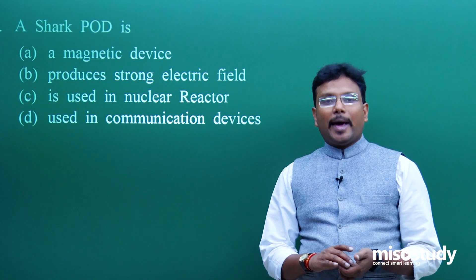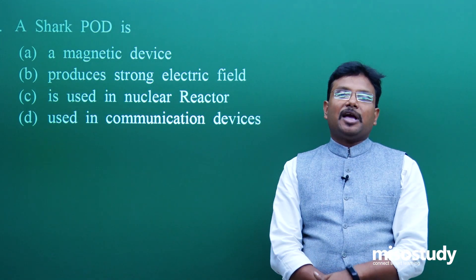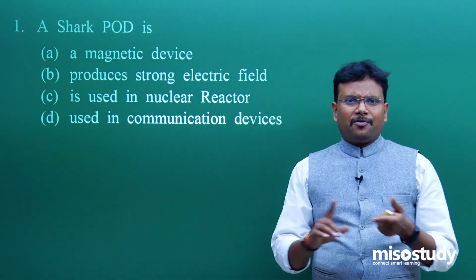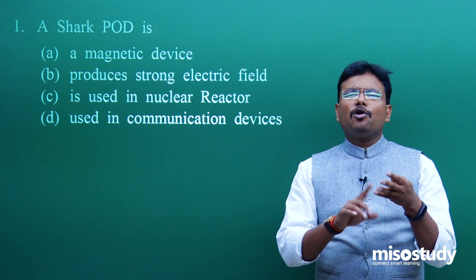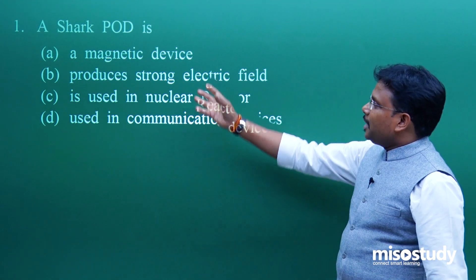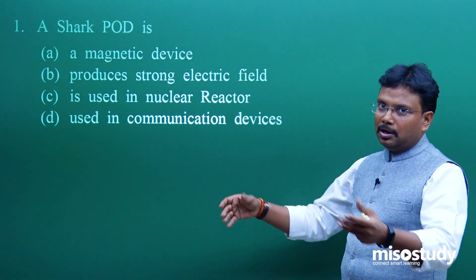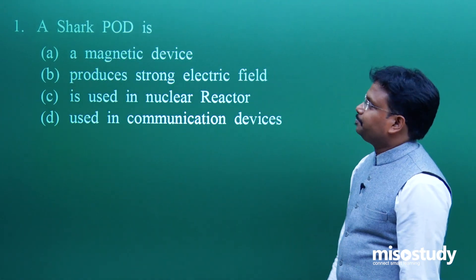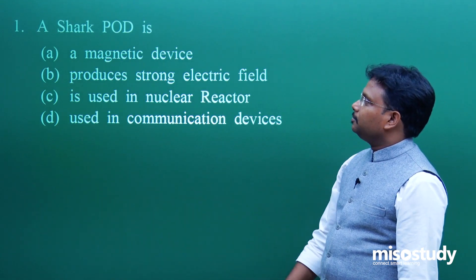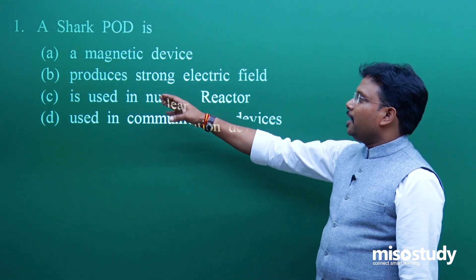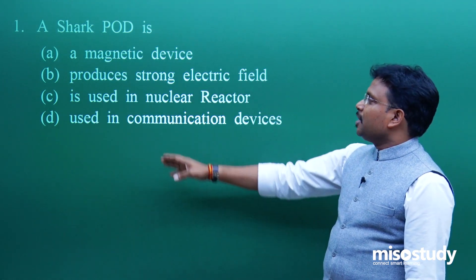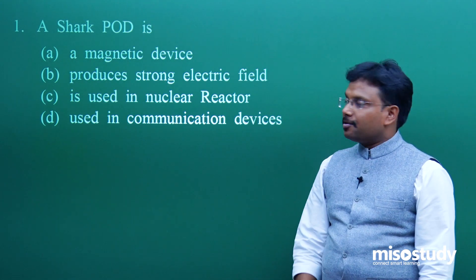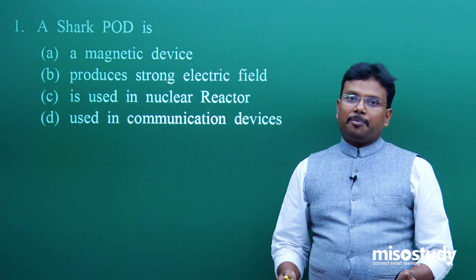The very first topic of your class 12th book is electrostatics — when charge is stable. There are various concepts: force, potential, electric fields, and so on. I picked one question which is from your course — that is a shark POD. It is a device. What is it? Is it a magnetic device, a device which produces a strong electric field, is used in a nuclear reactor, or used in communication devices? What exactly is a shark POD?